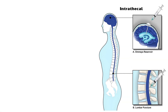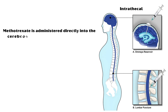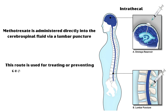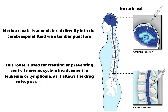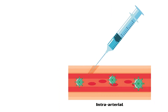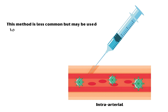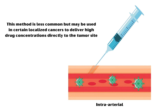Intrathecal injection: here, methotrexate is administered directly into the cerebrospinal fluid via lumbar puncture. This route is used for treating or preventing central nervous system involvement in leukemia or lymphoma, as it allows the drug to bypass the blood-brain barrier. Intra-arterial administration involves injecting methotrexate directly into an artery supplying blood to a tumor; this method is less common but may be used in certain localized cancers to deliver high drug concentrations directly to the tumor site.